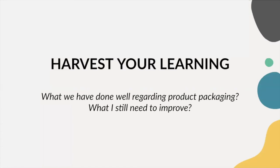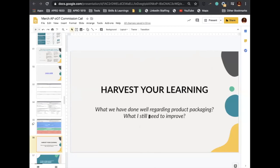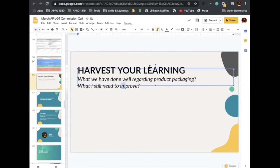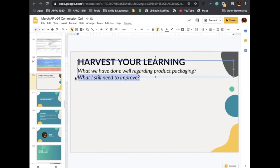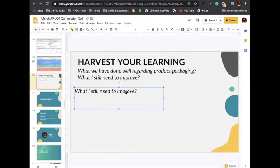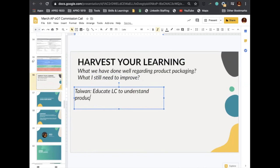Now let's do a harvest of learning: what have you done well regarding product packaging, and after learning about product packaging today, what are the things you still need to improve? Who wants to go first? One participant shared that for their side, they need to have their LC focus more on specific products for packaging, and the second thing is to help align the IR partner to better the LC-to-LC partnership.